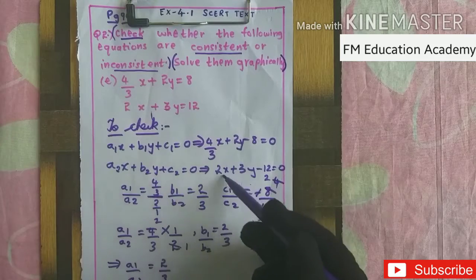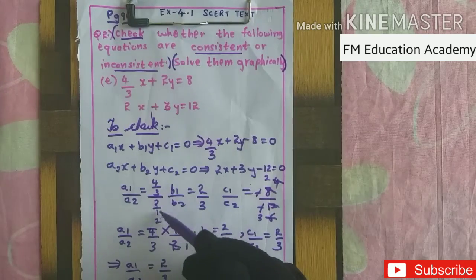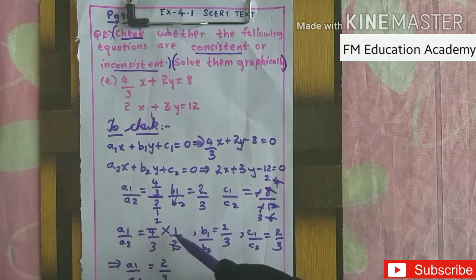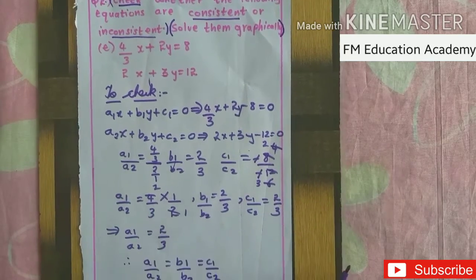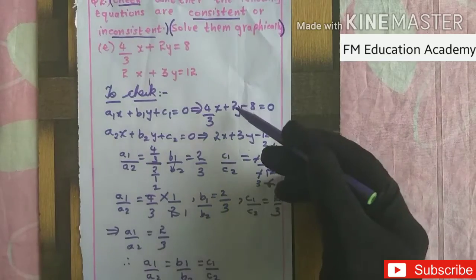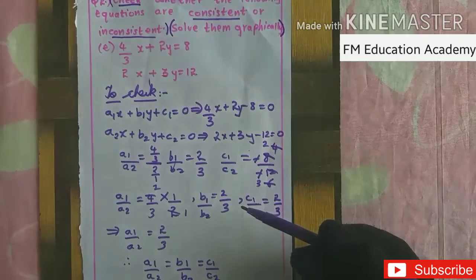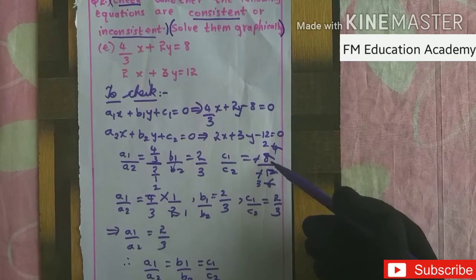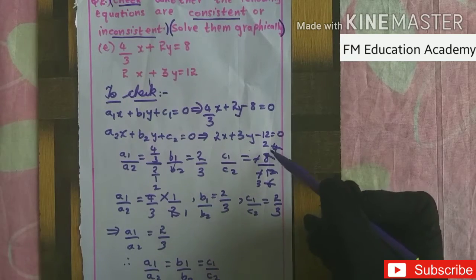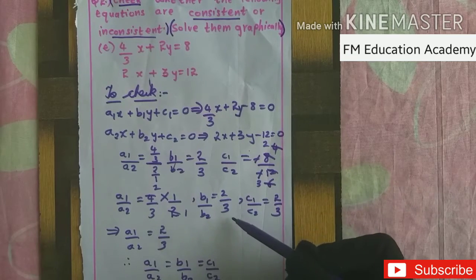So a₁/a₂ = (4/3)/2 = 4/3 × 1/2 = 2/3. Next, b₁ = 2 and b₂ = 3, so b₁/b₂ = 2/3. For c₁/c₂: c₁ = −8 and c₂ = −12, the negatives cancel, giving 8/12 = 2/3.